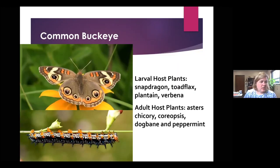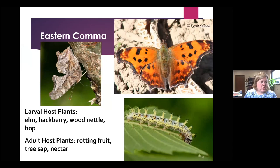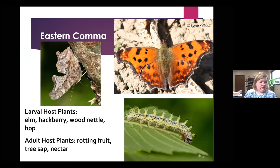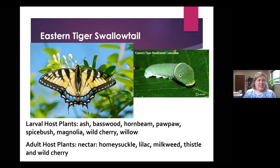The common buckeye is pretty common out there. The eastern comma kind of looks like a question mark — again, adults feed on rotting fruit, sap, and nectar, and it looks like a piece of leaf until it opens up revealing orange. Eastern tiger swallowtail is very common — although probably not feeding on ash anymore — but easy to find on spicebush, hornbeam, cherry, and willow. You can see them a lot at this time of year.